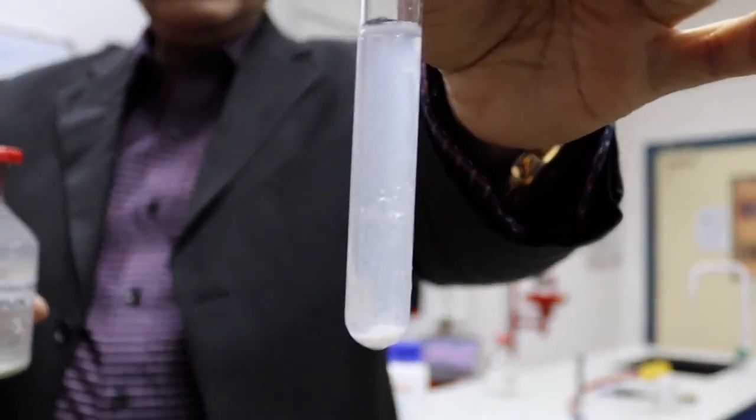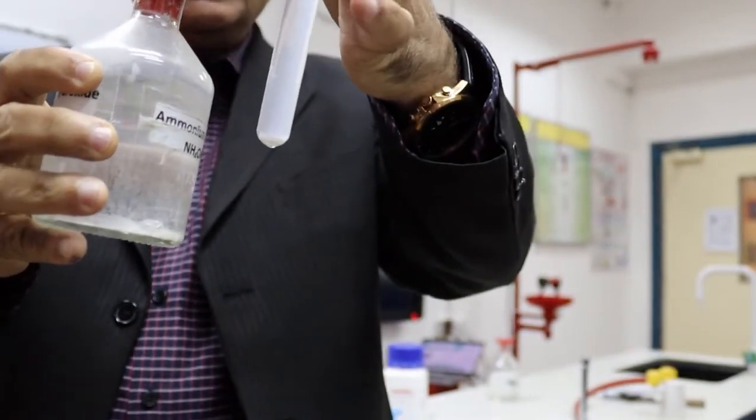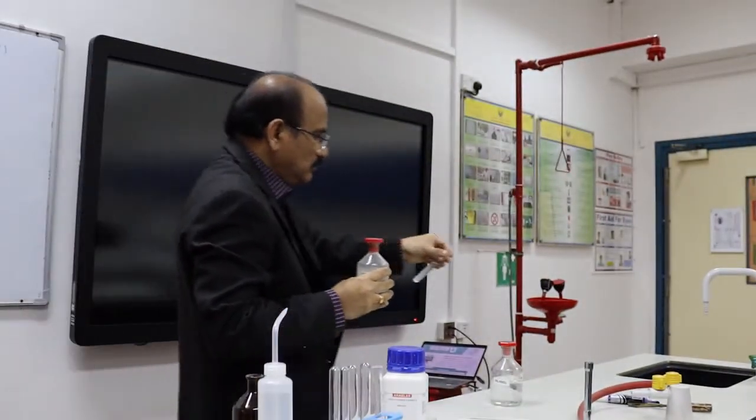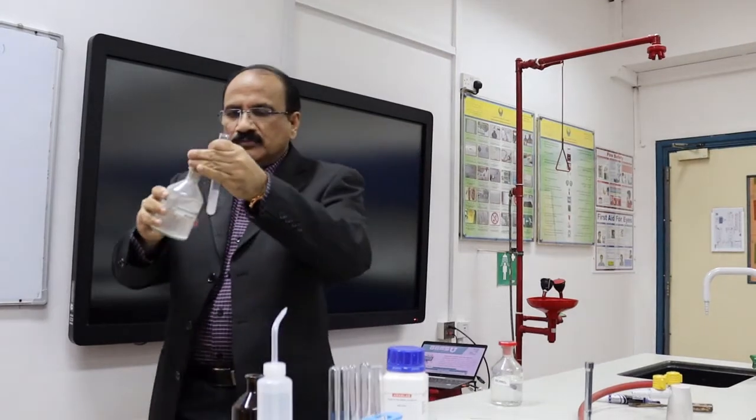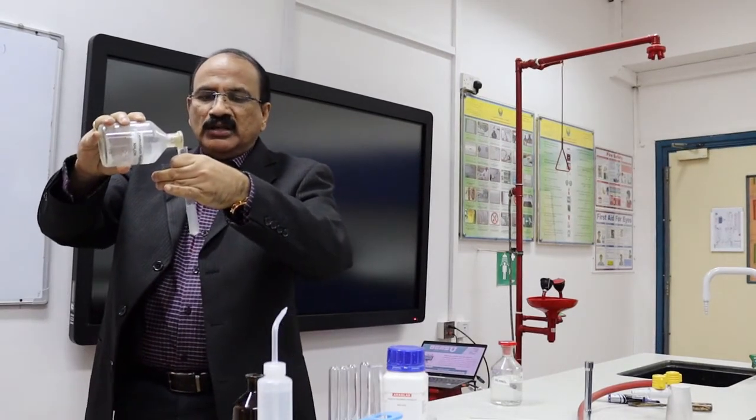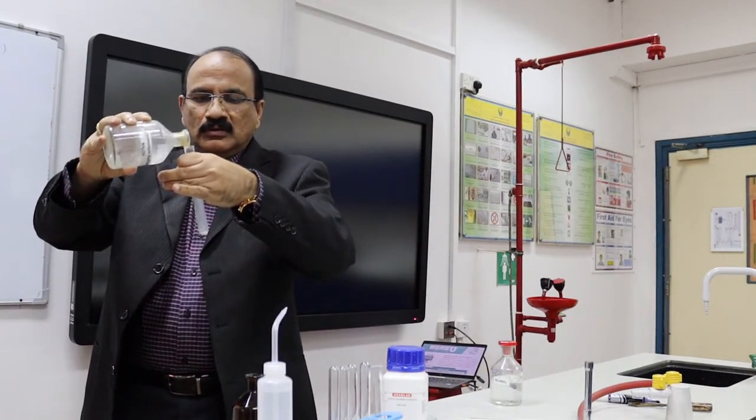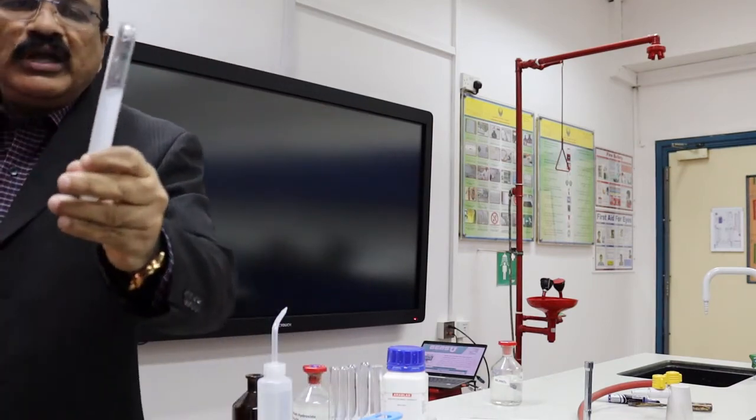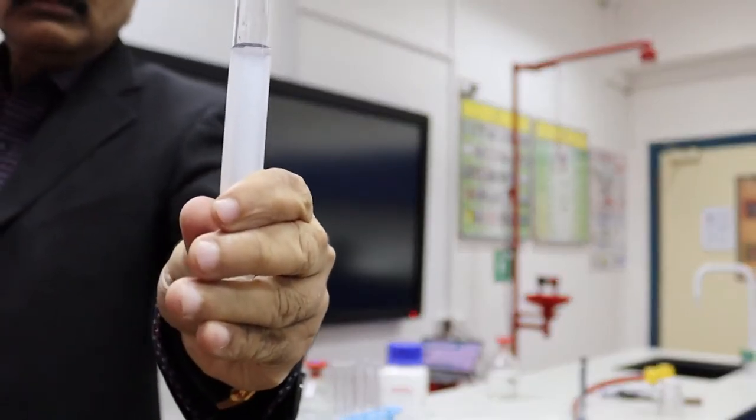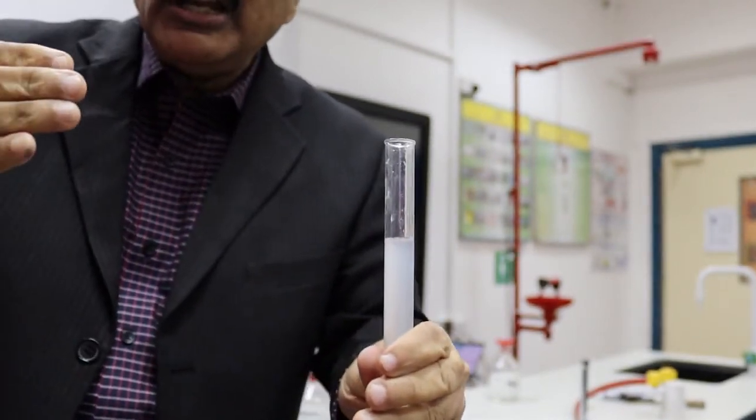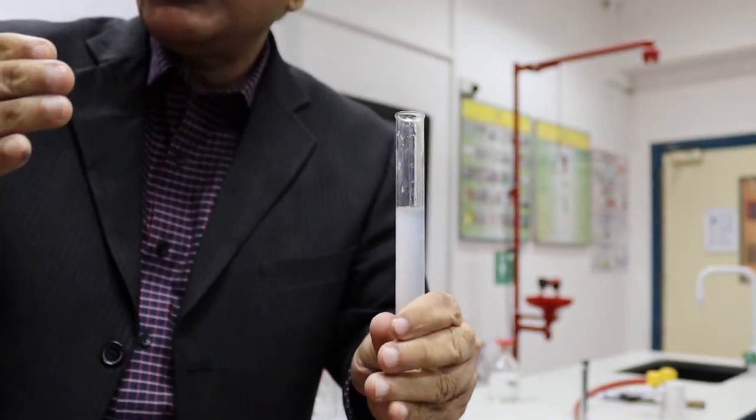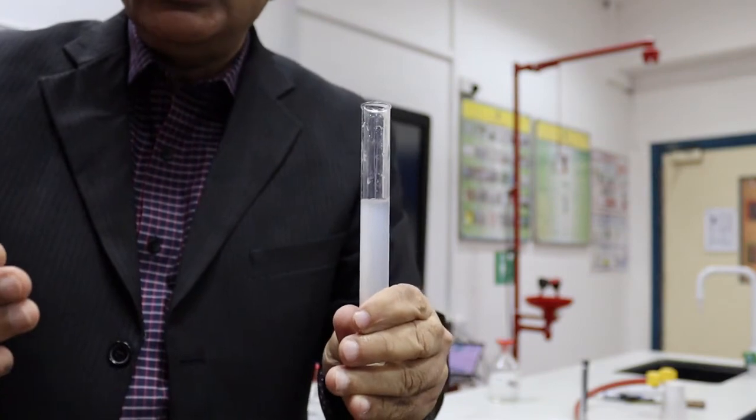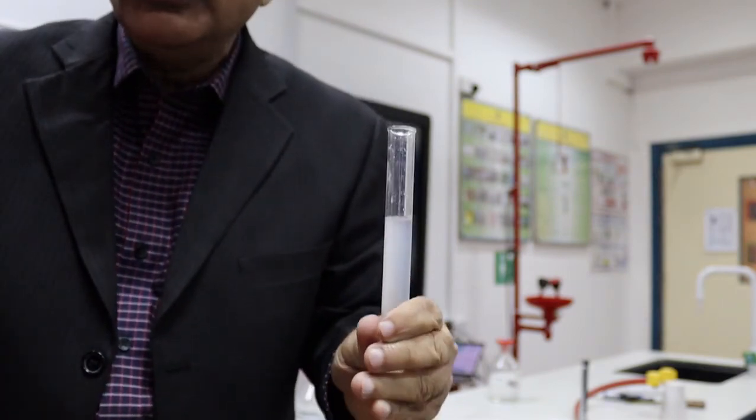So precipitate is getting dissolved. If you add more ammonium hydroxide, the precipitate will completely vanish. So this is ammonium hydroxide. You can see the clear solution now. You can see the clear solution. So white curdy precipitate is soluble in excess of ammonium hydroxide. That's a confirmatory test of chloride ion.